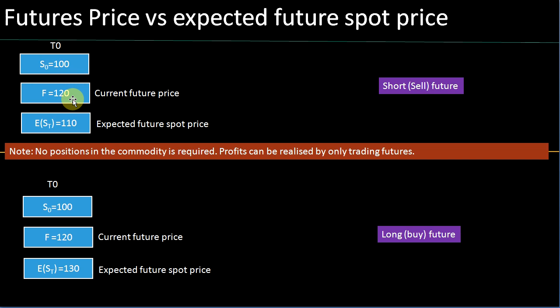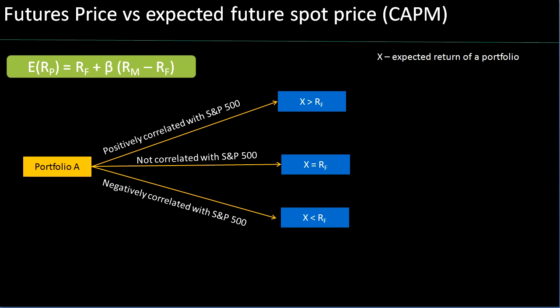In the futures market, a six-month future on the same asset is trading at $120. So as part of the futures contract, you can have a position on that asset in six months' time at $120. But let's assume the expected future spot price — the average market expectation of what the asset will be in six months' time — is $110. In other words, it's different from the futures price. Sometimes it can be less, like $110, and sometimes it can be more, like $130. In this section, we are going to link the capital asset pricing model to explain why this could sometimes be the case.